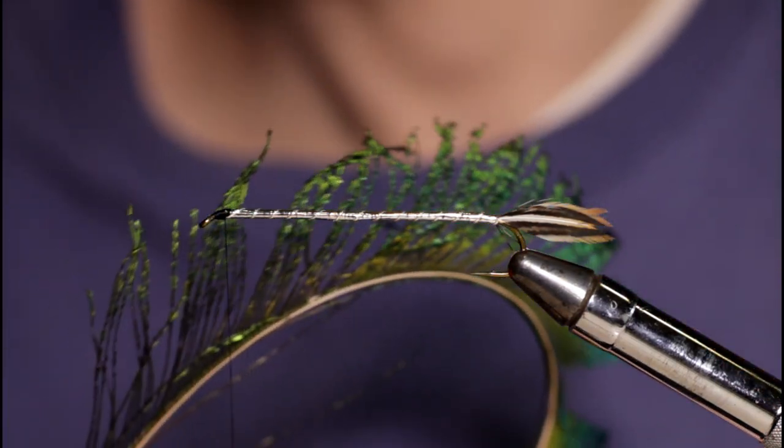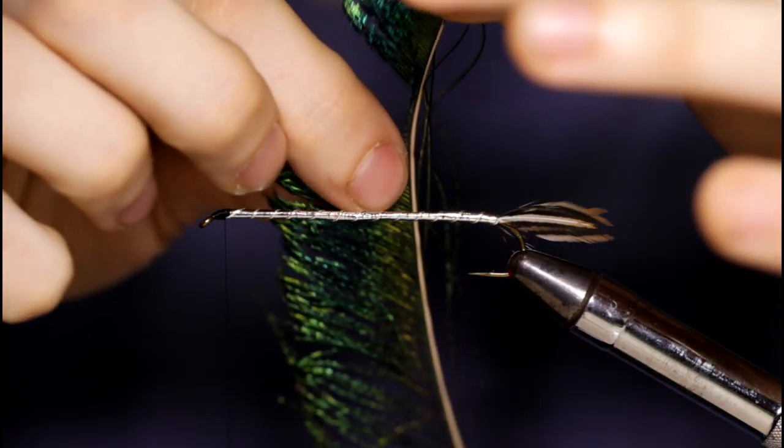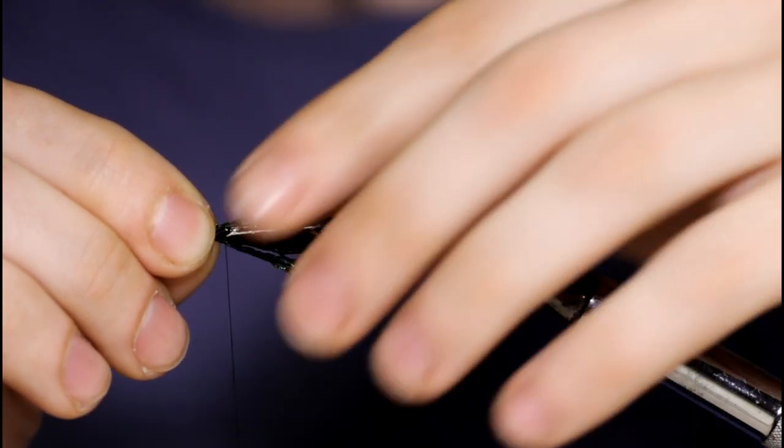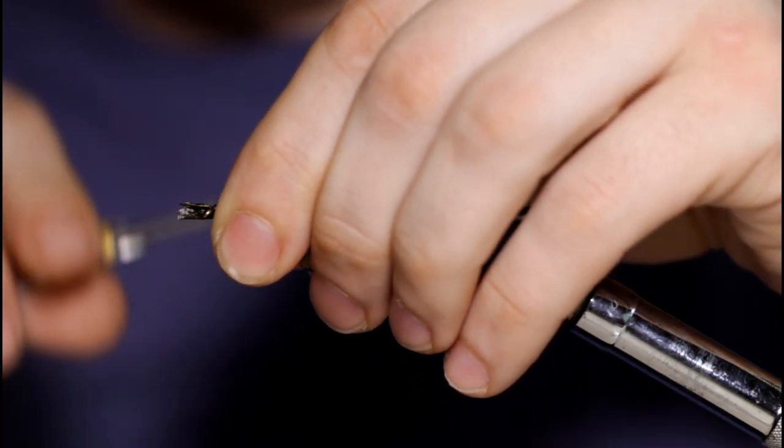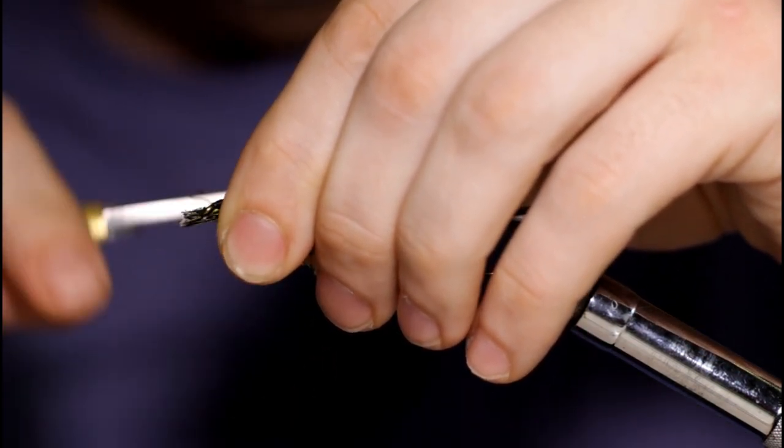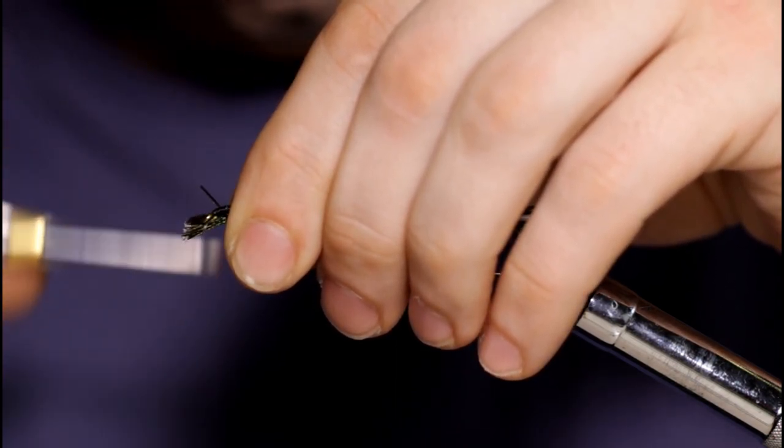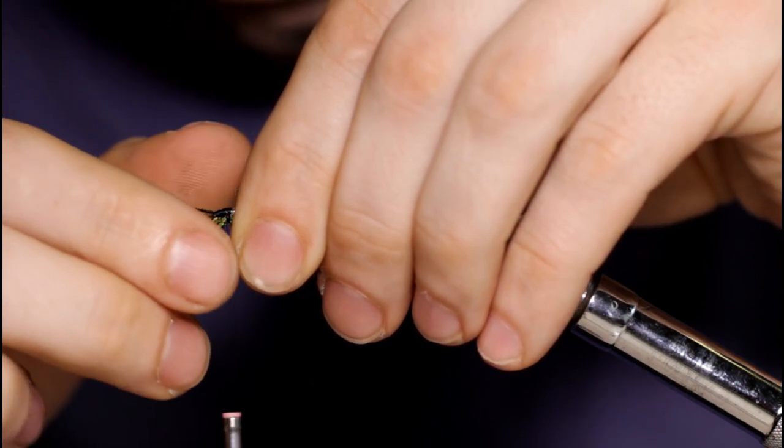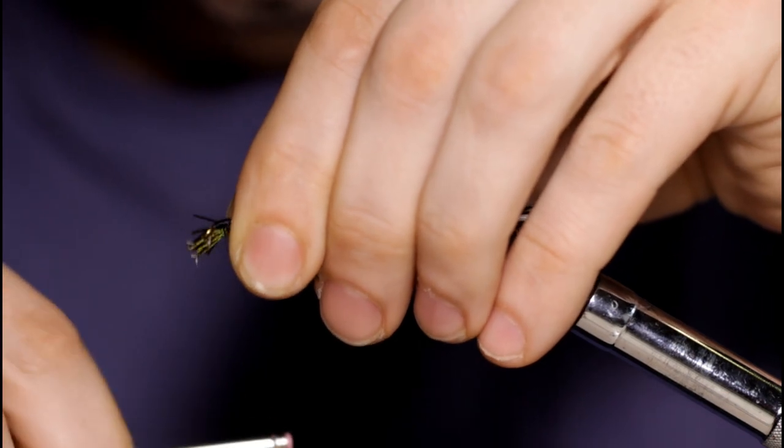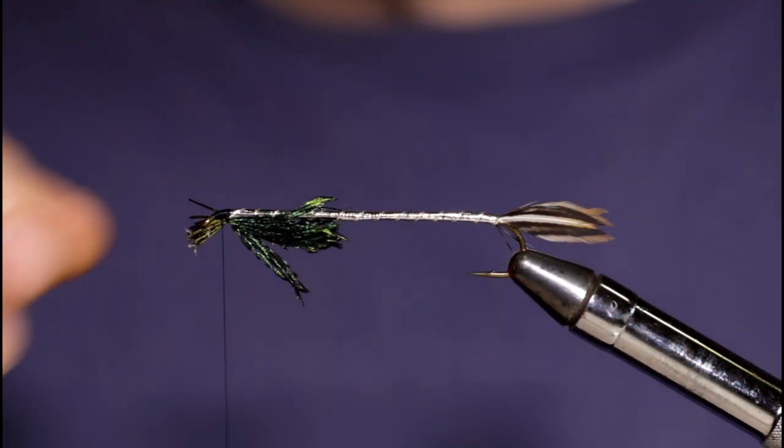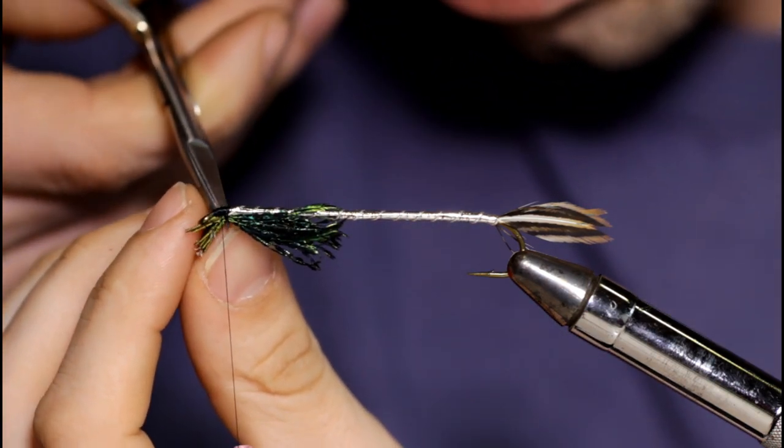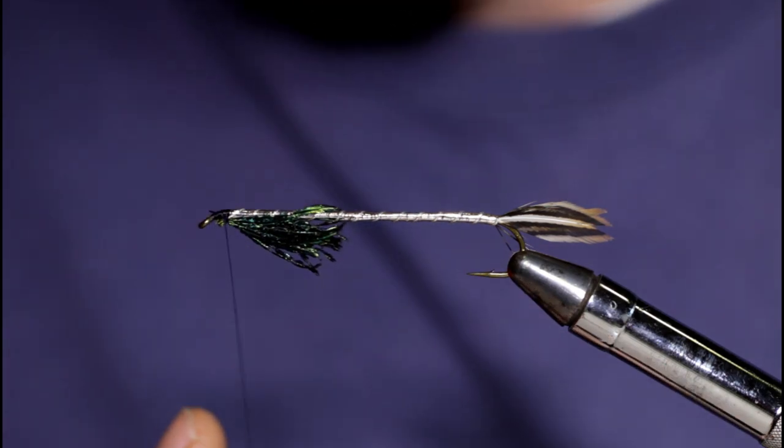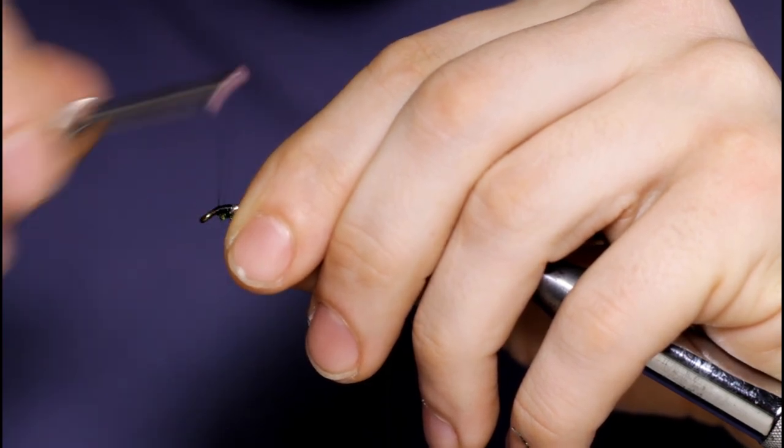All right, you can see here I've got some peacock swords. I'm just going to grab eight or nine fibers of this and tie this in as the throat. So I'm just going to come in with my fibers here, place them under the hook shank, hold them into place and take a couple wraps over the top here. Just a loose wrap at first, one in front of that and another. Make sure they're all oriented underneath the hook here. Come in and snip off those butt ends.